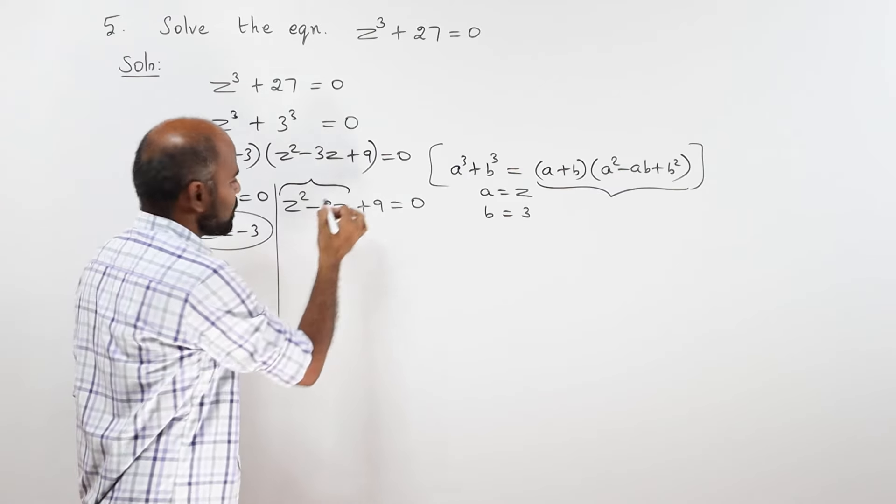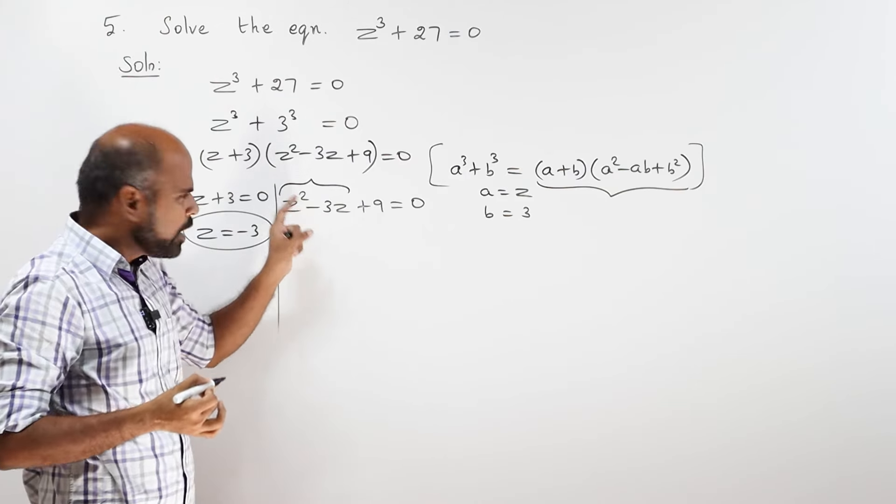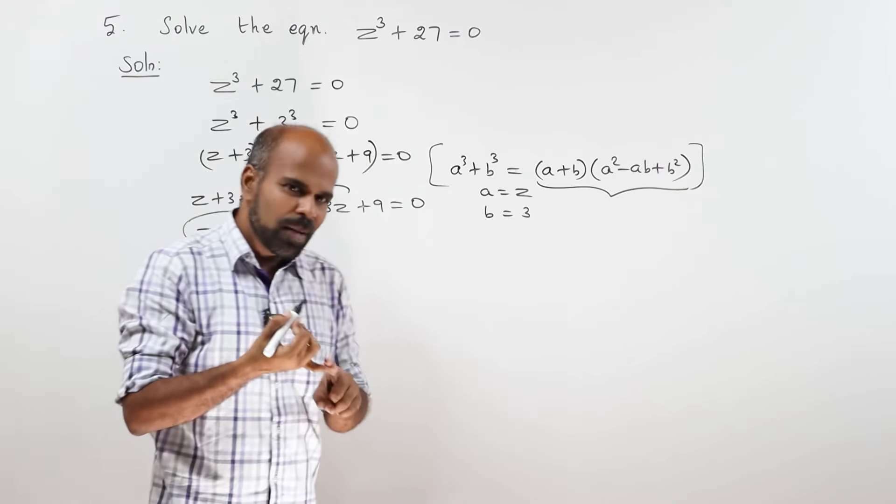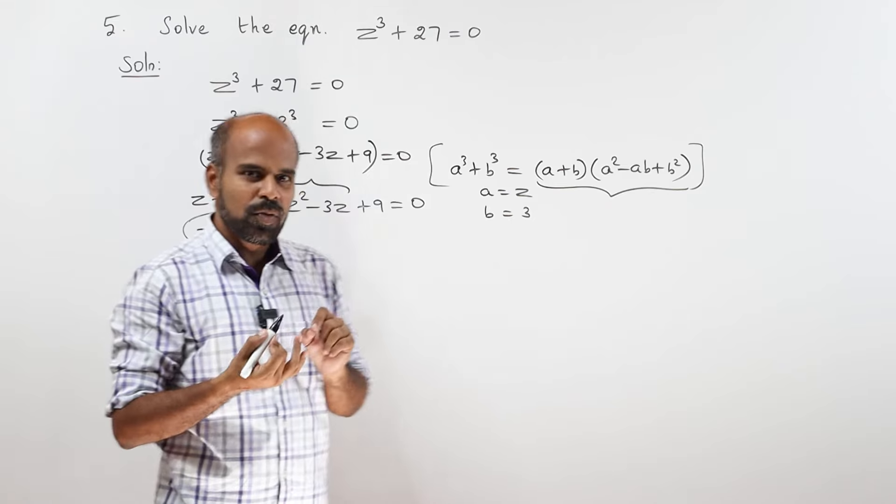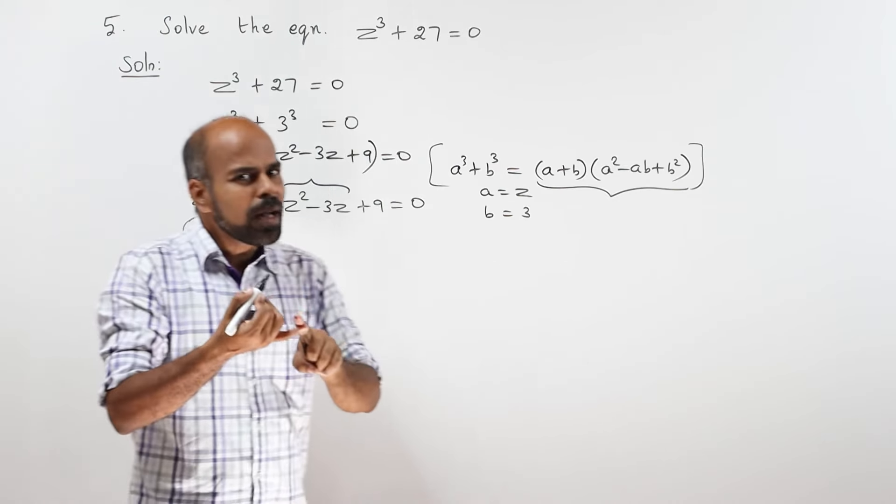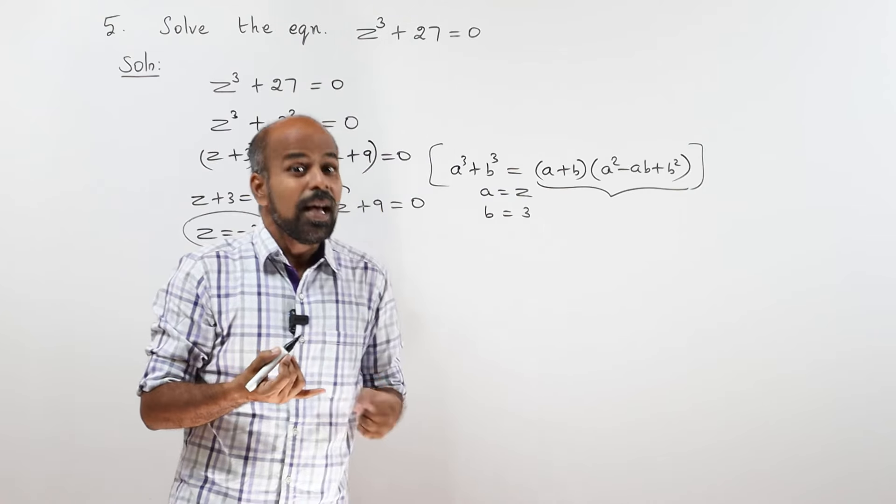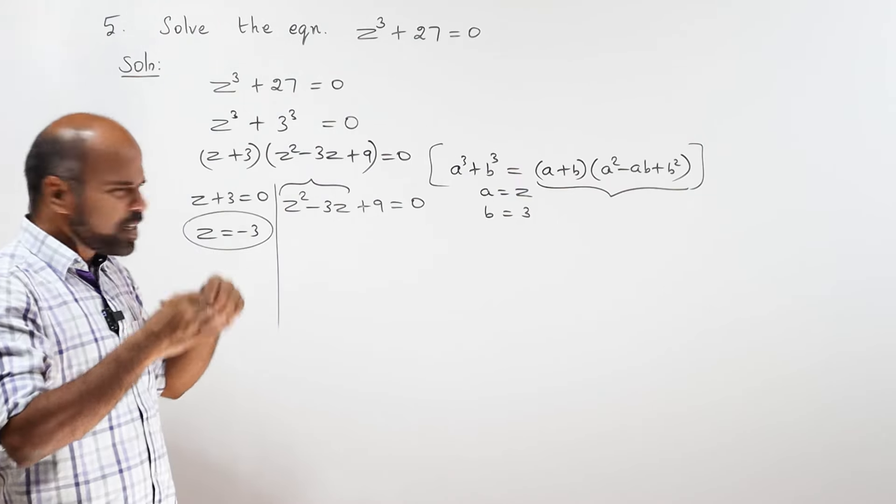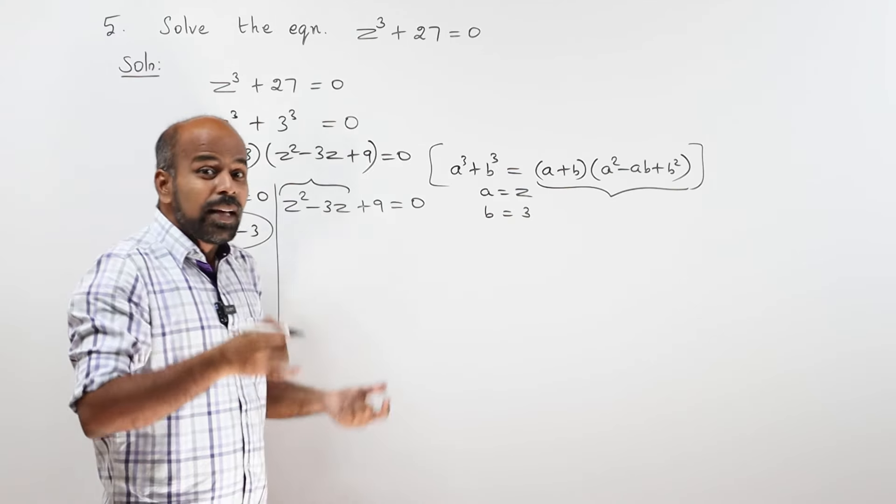It is quadratic equation. The highest power, that is degree 2. That is quadratic equation. There are 3 methods: formula method, factorization method, completing the square method. Completing the square method is best. I am telling you how to do this. If you want to do this again, try to do this again.